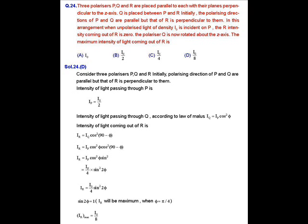The intensity of light passing through Q, according to Malus's law, is Iq = Ip cos²φ, where φ is the angle by which Q is rotated about the z-axis. So the intensity of light coming out of R is Ir = Iq cos²(90° − φ). That implies Ir = Ip cos²φ cos²(90° − φ), which equals Ip cos²φ sin²φ, which equals Ip/4 × sin²(2φ).